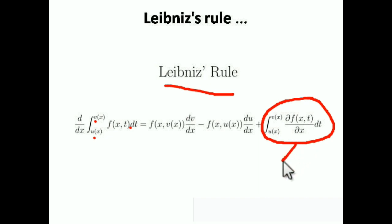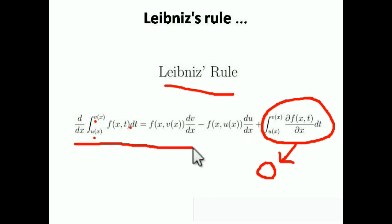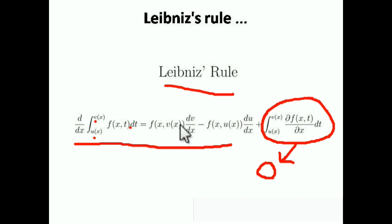This partial differentiation part in most cases becomes zero, because when we apply partial differentiation with respect to x we keep t constant, so it becomes zero. So we are just left with the first two terms. In summary: differentiation of a definite integration equals — upper limit substituted in the function multiplied by differentiation of the upper limit, minus lower limit substituted in the function multiplied by differentiation of the lower limit. That's the Leibniz rule.